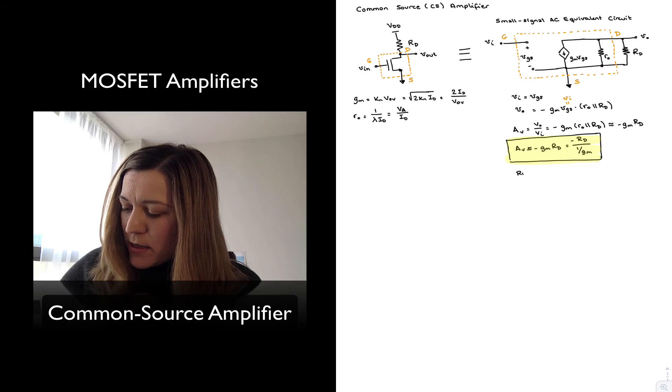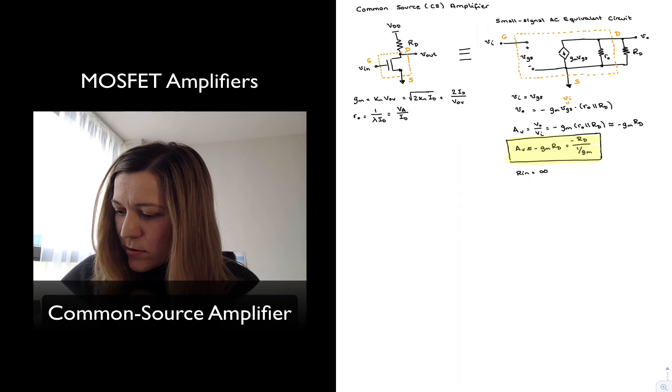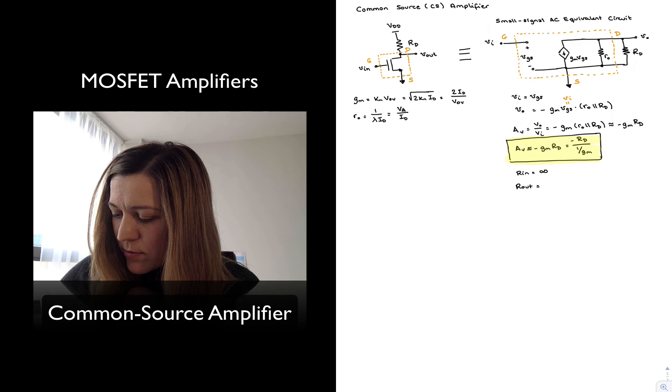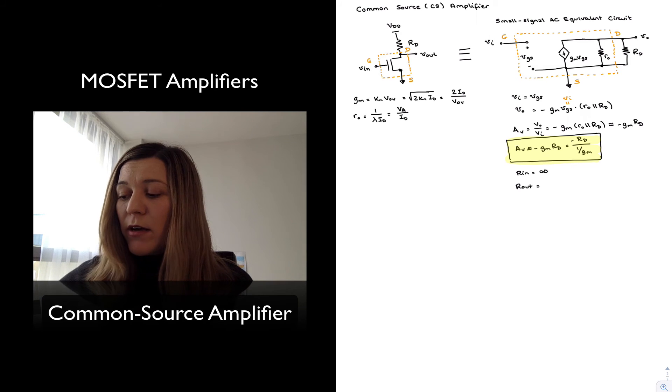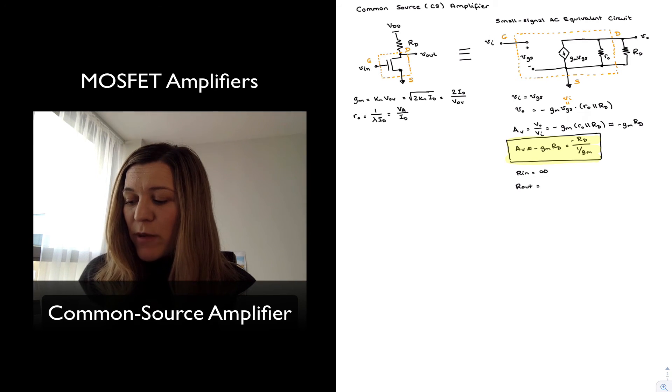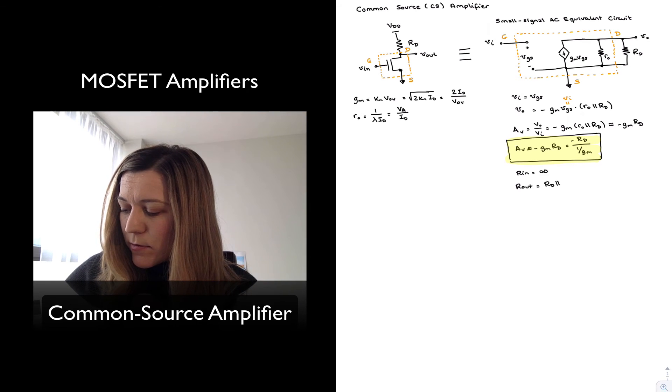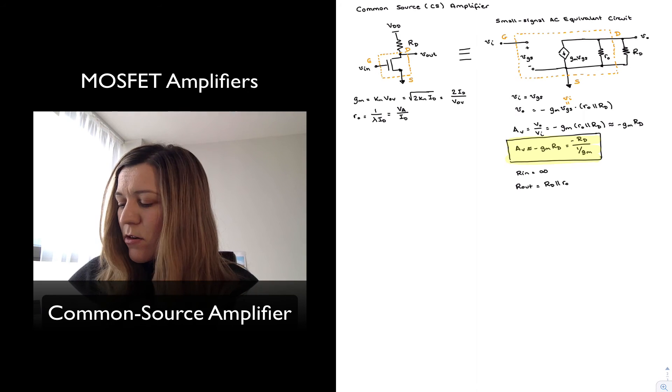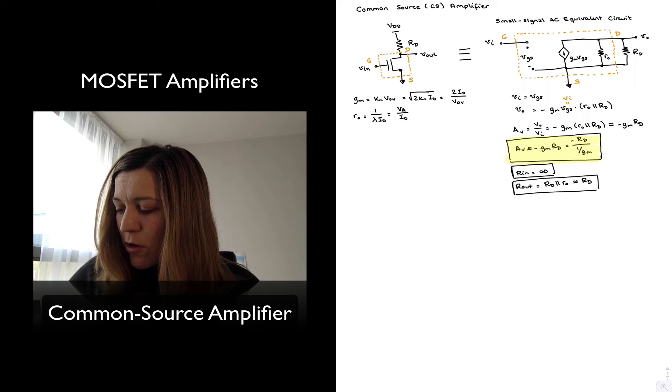The input resistance, in this case, it's pretty clear that it's infinity. And the output resistance r_out, I can calculate by turning off my input signal and applying a test source at the output. And it's pretty clear if I turn off my input signal, VGS is just going to be equal to zero. Basically, it will have the gate tied to ground and the source tied to ground. So VGS will be equal to zero. And my current source, which is dependent on VGS, will be equal to zero. So it will be an open. And so I will be left with little r_o in parallel with RD. And again, since RD is typically going to be much smaller than little r_o, I'm going to be able to approximate that as RD. And so that's my input resistance and output resistance for my common source amplifier.